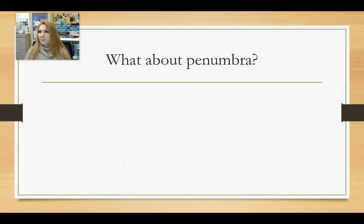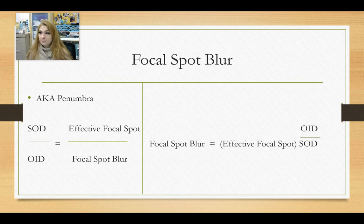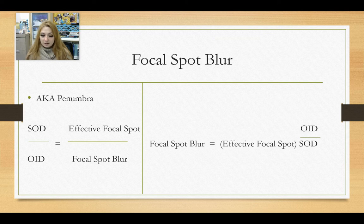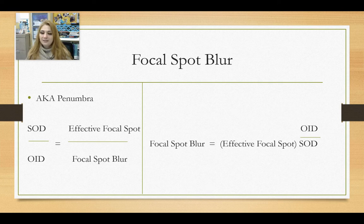Now let's talk a little bit about penumbra. Penumbra is a term you may hear more frequently at your clinical site because it's a bit more of an old-school term. The same interchangeable terms are geometric unsharpness or focal spot blur. Focal spot blur is probably the one you're going to hear on your registry or CQR exam. When we're talking about this, we're really talking about that area that is unsharp — it's kind of gray, it's fuzzy, it's just not a sharp image.